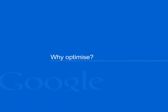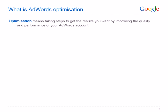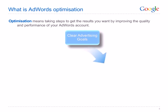Why should you optimise your AdWords account? Optimisation is the process of modifying your ad campaigns and making tests to improve the quality and performance of your AdWords ads, based on your advertising goals, which should be clearly defined. Optimisation can involve organising your account for maximum effectiveness and making changes to the structure of your campaigns.